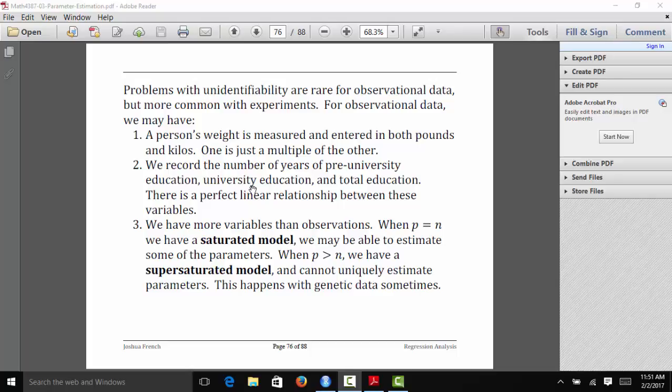You can also have a problem with unidentifiability if you have more variables than observations. If the number of regressors is equal to n, you have what is known as a saturated model. And when the number of regressors is greater than n, you have a supersaturated model. You cannot uniquely estimate your parameters. This may seem unrealistic, but in fact, with genetic data, this is actually really common.